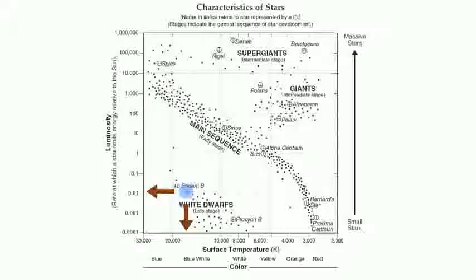A lot of times, the brightness of stars is going to correspond with their actual sizes. The bigger stars tend to be brighter, and the smaller stars tend to be a little bit dimmer. It's very important to be able to identify your stars in relation to luminosity, surface temperature, and color. That's pretty much it for this chart — see you next time.